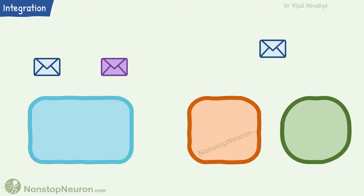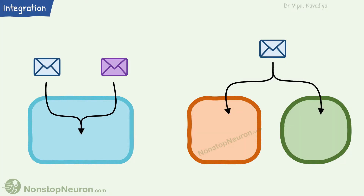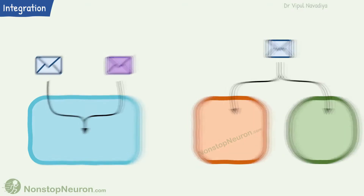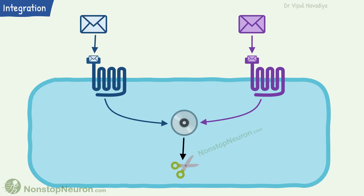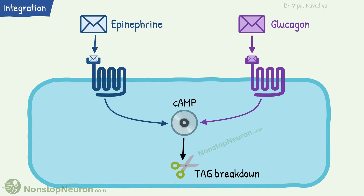The second function is the integration of signals. The second messenger system allows signals from the first messenger to converge or diverge. Different ligand-receptor combinations may activate the same intracellular signaling pathway and thereby affect the same response. For example, epinephrine and glucagon are different first messengers and activate different receptors, but they both follow the same second messenger system — the cyclic AMP pathway — and produce the same response: an increase in triacylglycerol breakdown.